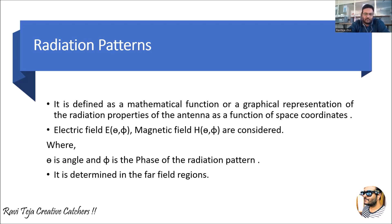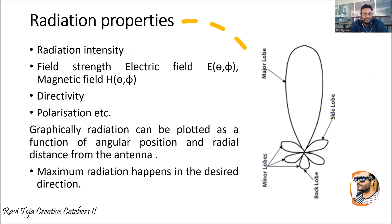Now coming to the radiation properties of an antenna: the first one is radiation intensity, the second one is field strength, which depends on the fields integrated in the signal — the electric field E(θ, φ) and magnetic field H(θ, φ). The third one is directivity and the fourth one is polarization. We will see all these terms in the future. Graphically, radiation is plotted as a function of angular position or radial distance from the antenna.